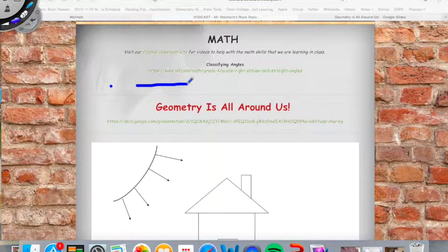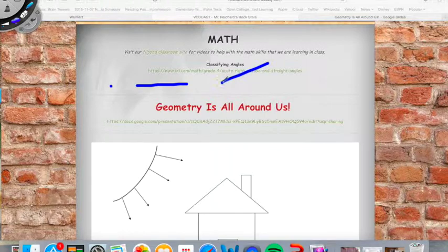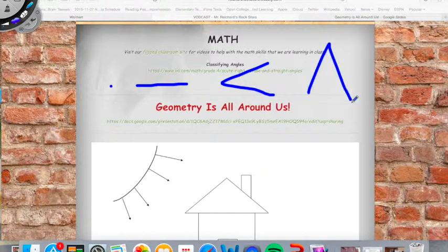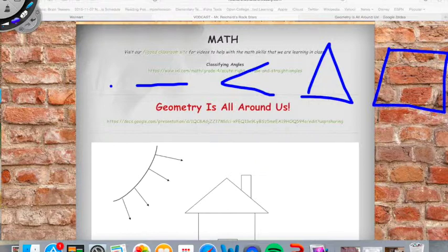Because what you're going to find is that as we study geometry, everything starts with a point, and then it gets to a line, and then we get to an angle. Okay? And then we get to triangles, and then we get to quadrilaterals. Okay? And that's kind of going to be our progression.